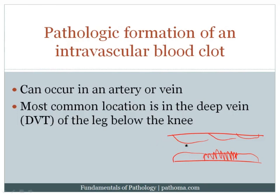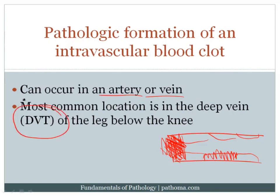we have some disorder that results in pathologic activation of the system, so that we start forming intravascular blood clot, or thrombus, abnormally — at a time when we don't need it, and within the blood vessel itself, which you don't want to seal off with a blood clot. This can occur within an artery or a vein. The most common location is the deep vein of the leg, usually below the knee, and that's called a DVT.